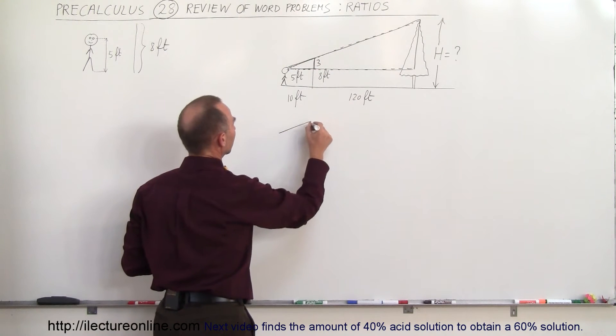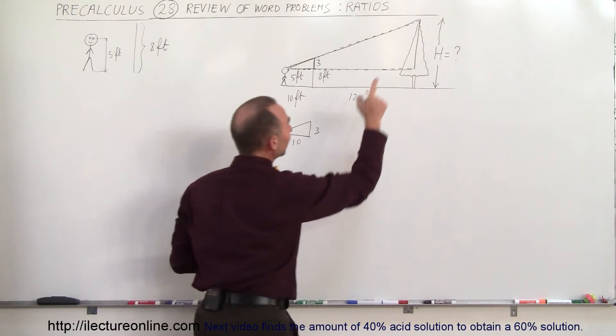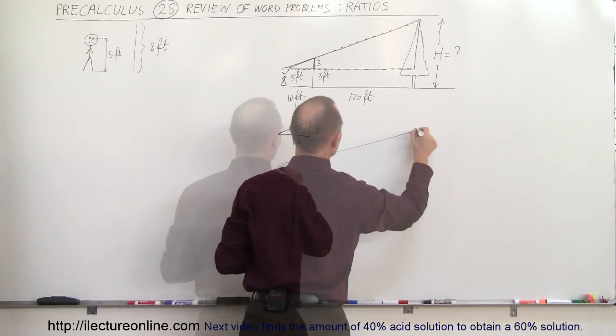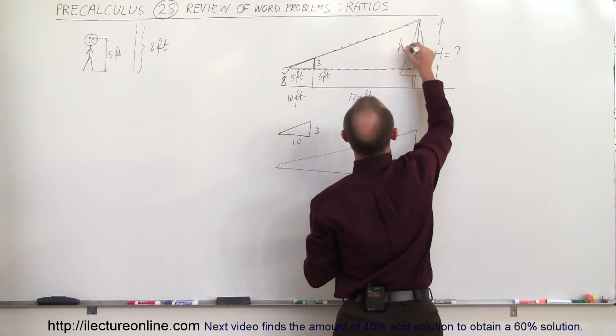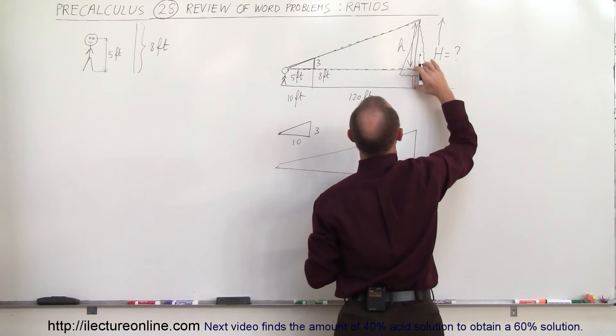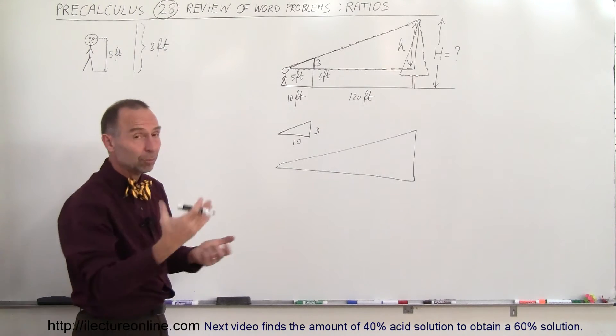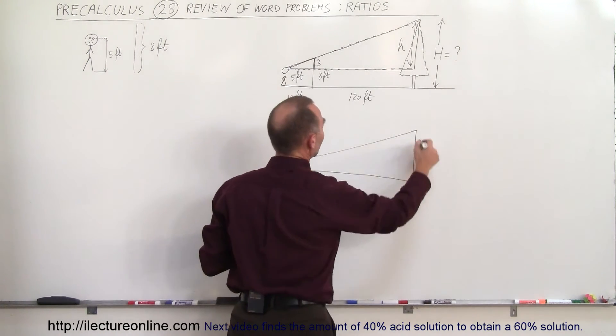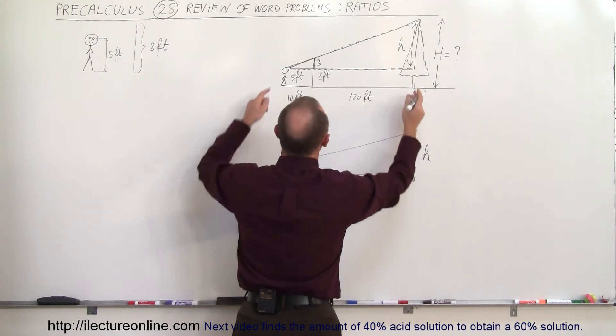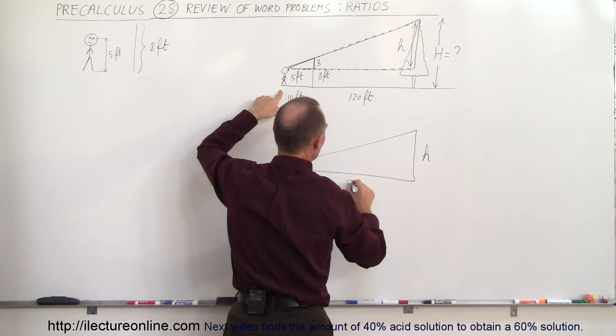So I have a small triangle right here, the vertical length is 3 and the horizontal length is 10. Then we have the big triangle right here, and we can see here that this distance, let's call that small h. Small h would be the distance from 5 feet above the ground to the top of the tree, that means that big H is simply small h plus 5. And we can then say that this height then would be small h, and this distance right here would be 120 plus 10 or 130 feet.